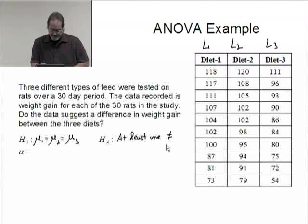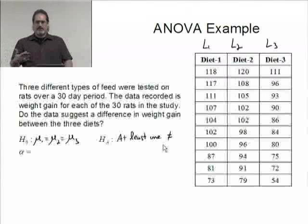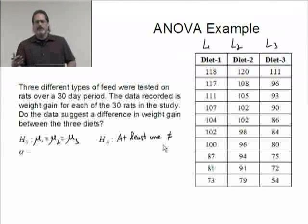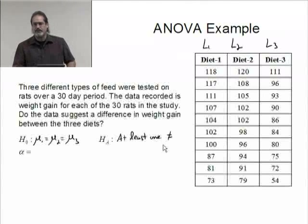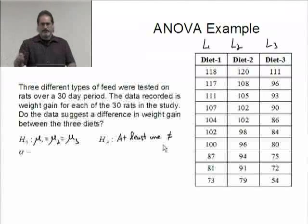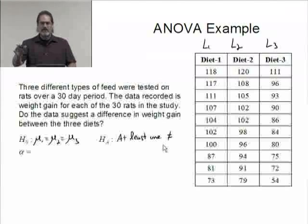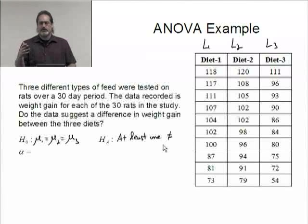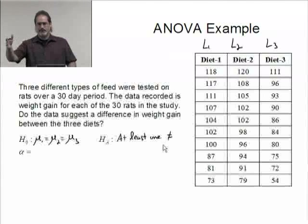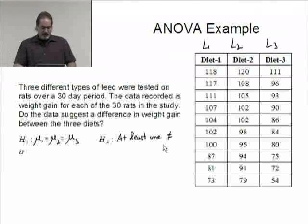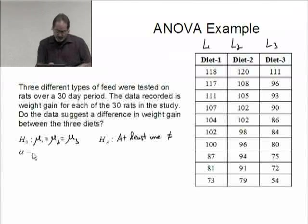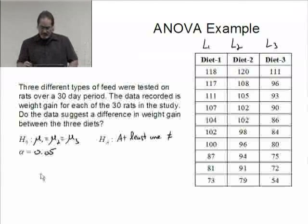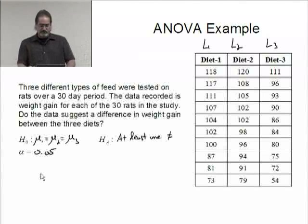The alternative hypothesis will simply be, in English, at least one is not equal. Somebody's different. That's the alternative hypothesis. Remember I said earlier that the ANOVA won't tell you which group is different, only if there's a group different. If there is a group different and you need to determine which one, you go to a multiple comparison test. Alpha, let's stay with 0.05. Let's take a look at the assumptions.